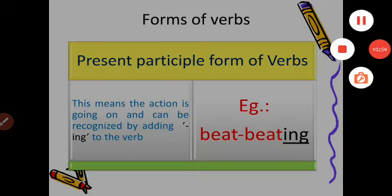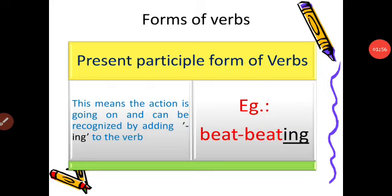Present participle — this means the action is going on and can be recognized by adding -ing to the verb. Present participle forms are those words which convey that the action is going on and not yet completed. It can be recognized if -ing is added to any word.